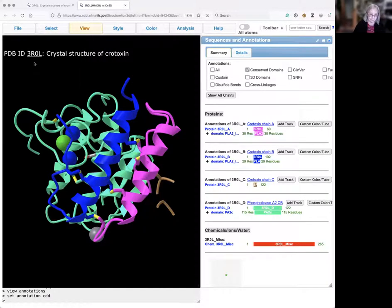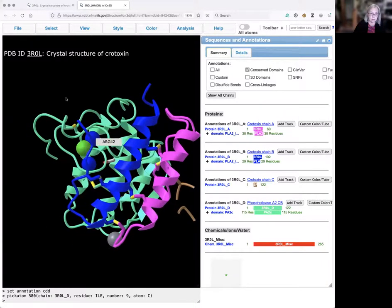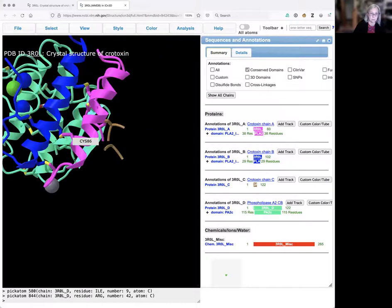So the next thing I want to be able to do is be able to move the structure around. To do this, I hold the control key down and then I can click and I can drag the structure. So that allows me to move it to different parts of the screen.